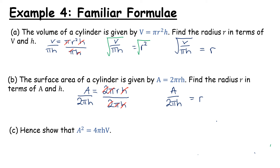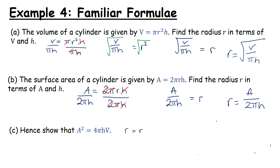Now we're looking at part c: hence show that a squared equals 4 pi h v. The word 'hence' is important — it means using our previous parts. From part a we got r equals the square root of v over pi h, and from part b we have r equals a over 2 pi h. Although we have two different expressions for r, they are equal. So we're going to set them equal to each other: the square root of v over pi h equals a over 2 pi h.